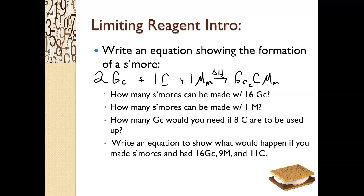The first question says: how many s'mores can be made with 16 graham crackers? We should end up with an answer of eight — if it takes two graham crackers to make one s'more and we have 16, that's eight. The next question says: how many s'mores can be made with one marshmallow? In our chemical equation we need one marshmallow per s'more, so the answer is one.